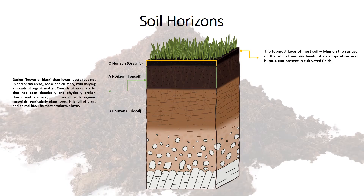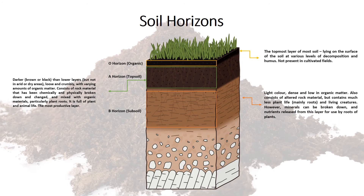Then we have the third one, which is the B horizon — the subsoil. As you can see, this one is a bit lighter than the topsoil. This layer is lighter because it is low in organic matter compared to the A horizon. There is less plant life and animal life, and less organic matter in this horizon.